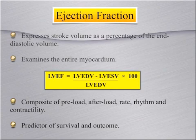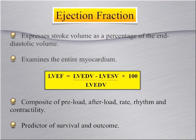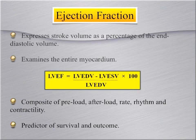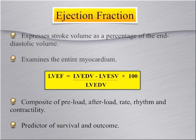Ejection fraction is the most common method for quantifying LV function. It expresses stroke volume as a percentage of LV end diastolic volume and takes into account the entire LV myocardium. It is calculated by subtracting LV end systolic volume from LV end diastolic volume, then dividing by LV end diastolic volume and multiplying by 100. By using stroke volume and end diastolic volume, it takes into account preload, afterload, rate, rhythm, and contractility. It has been shown in multiple studies to be a predictor of survival and operative outcomes, and is often globally estimated by trained viewers.